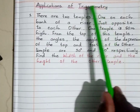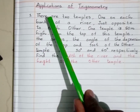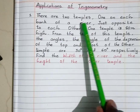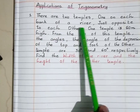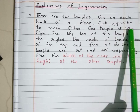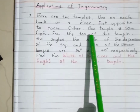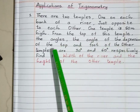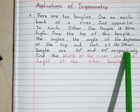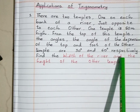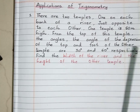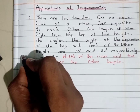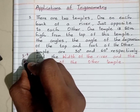Chapter: Applications of Trigonometry. We will see an application question from this chapter. There are two temples, one on each bank of a river, just opposite to each other. One temple is 50 meters in height. From the top of this 50-meter temple, the angles of depression of the top and foot of the other temple are 30 degrees and 60 degrees respectively. We should find out the width of the river as well as the height of the other temple. From this chapter, you may get a 3 to 4 mark question.